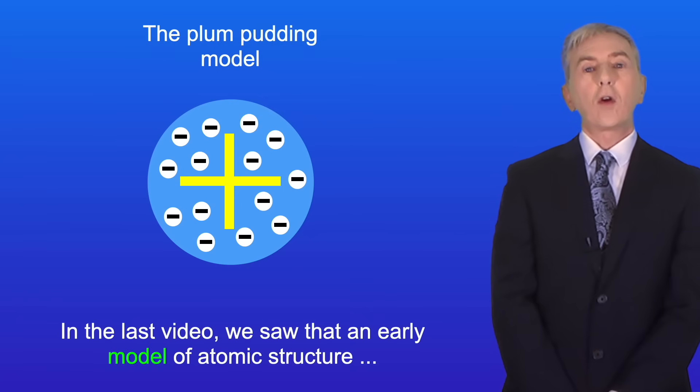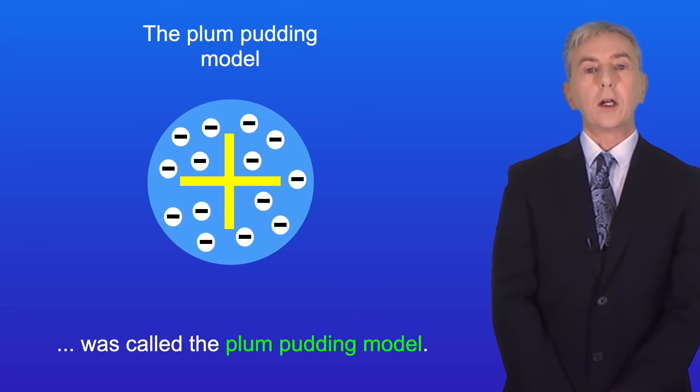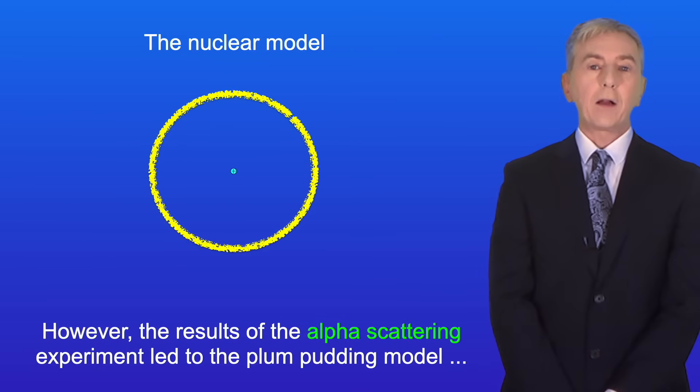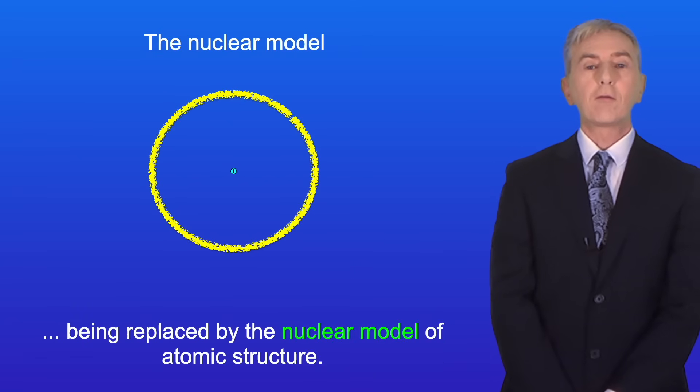In the last video we saw that an early model of atomic structure was called the plum pudding model. However the results of the alpha scattering experiment led to the plum pudding model being replaced by the nuclear model of atomic structure.